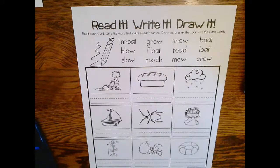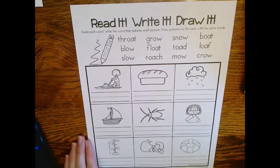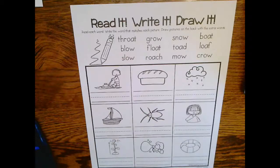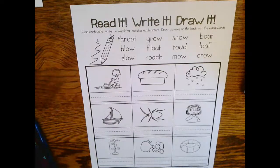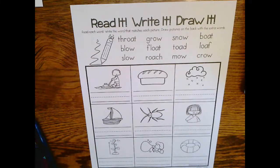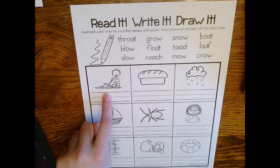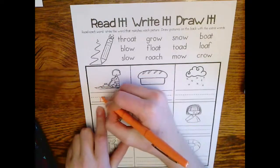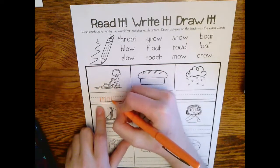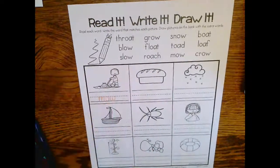I'm going to go through and tell you what each picture is showing. Some of these words do not have the OA sound or do not have the OA letters, but they make the O sound. Another letter combination that makes O is OW. So there are some sneaky words in here. This is a picture of mo — M-O — so we're going to write mo on the line.